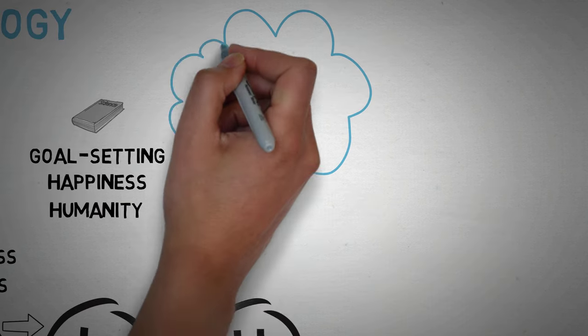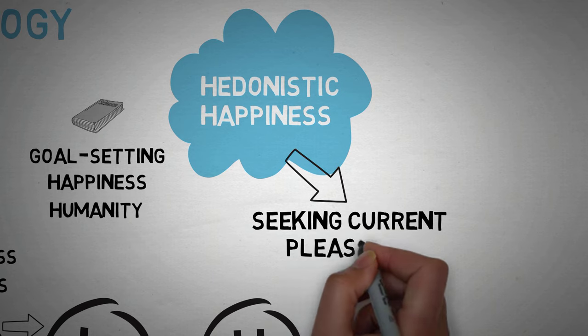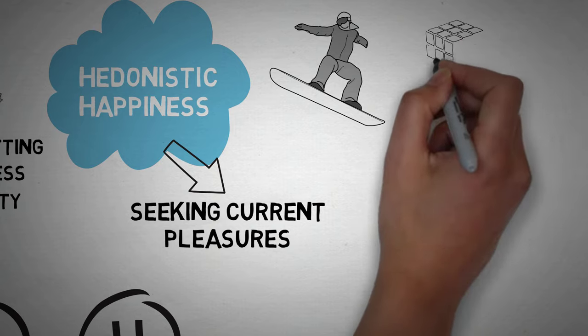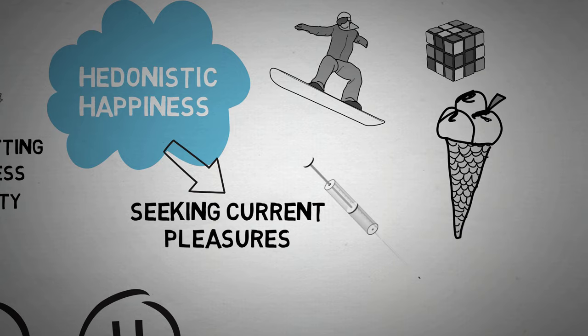The first I like to call hedonistic happiness, and this is basically seeking current pleasure. This would be stuff like snowboarding or playing a game, having fun. It could even include stuff like eating chocolate, ice cream, indulging in drugs or sex.